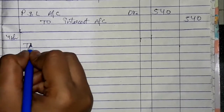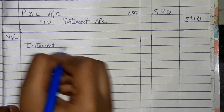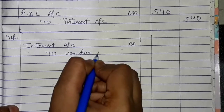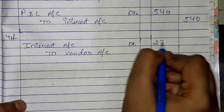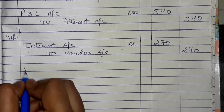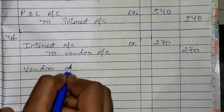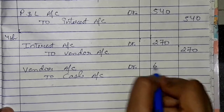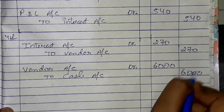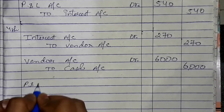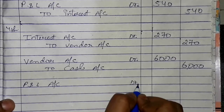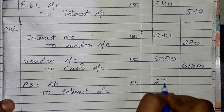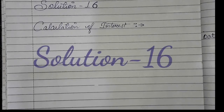Now the last year — fourth year entry: Interest Account debited to Vendor Account for 270. Then Vendor Account debited to Cash Account for 6,000 installment. Then Profit and Loss Account debited to Interest Account for 270. Now let's make question number 16.